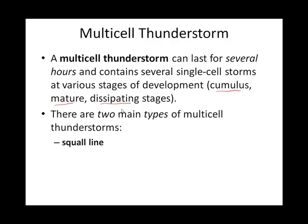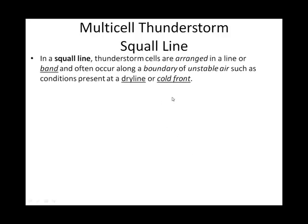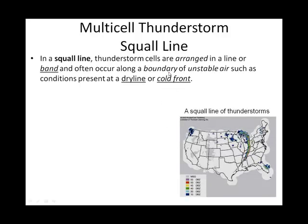There are two types of multi-cell thunderstorm systems. There's the squall line — you may have heard of those before — and then there is what we call the mesoscale convective complex, or the blob of thunderstorms. Starting with the squall line, we are probably most familiar with a cold front creating this squall line of thunderstorms.